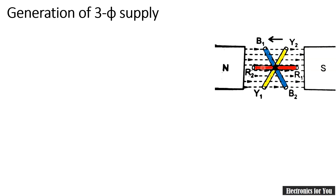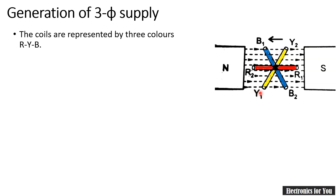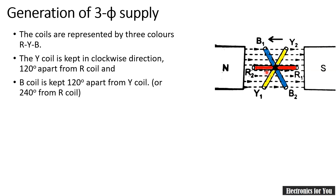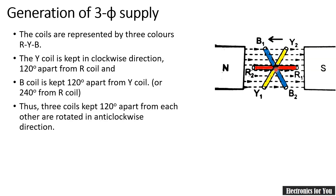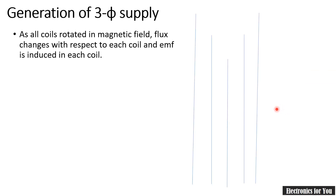In this case, the red conductor is R1 and R2. At 120 degrees from this conductor, the second conductor is placed, Y1 and Y2, indicated by yellow color. The third one is the blue wire, which is again 120 degrees apart from yellow, or 240 degrees away from the red conductor. So these three coils are 120 degrees apart from each other and if they are rotated in anti-clockwise direction, by Faraday's law of electromagnetic induction an alternating EMF will be generated.